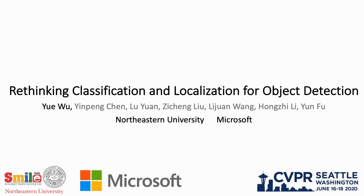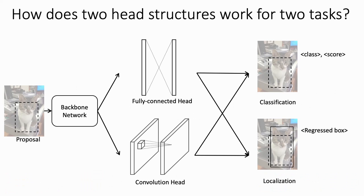This is Yue. I'm presenting our work Rethinking Classification and Localization for Object Detection, which is a joint work of Northeastern University and Microsoft.